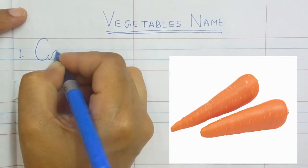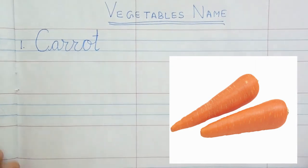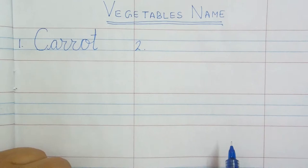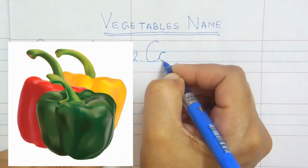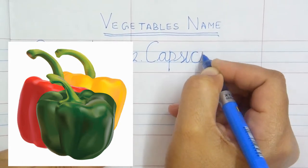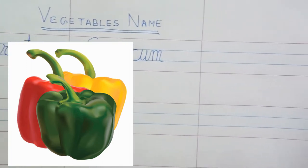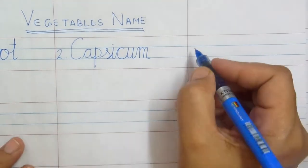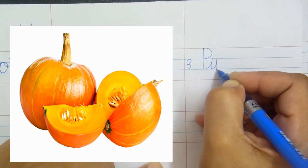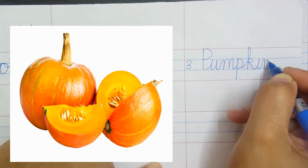Carrot: C-A-R-R-O-T, carrot. Capsicum: C-A-P-S-I-C-U-M, capsicum. Pumpkin: P-U-M-P-K-I-N, pumpkin.